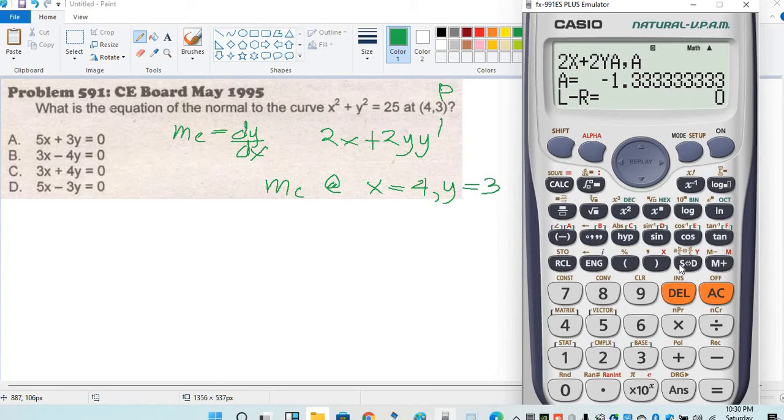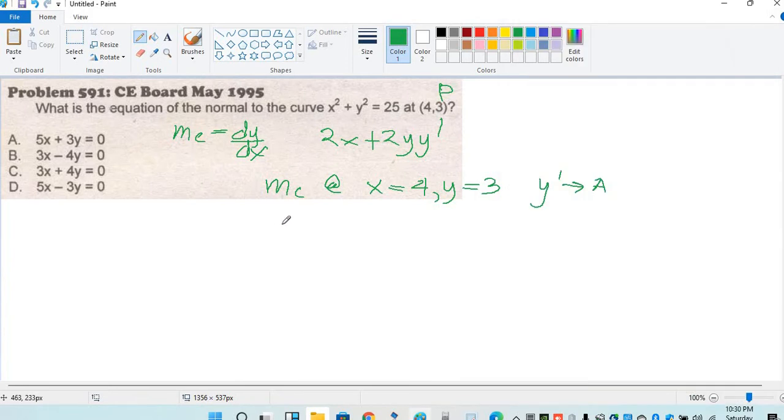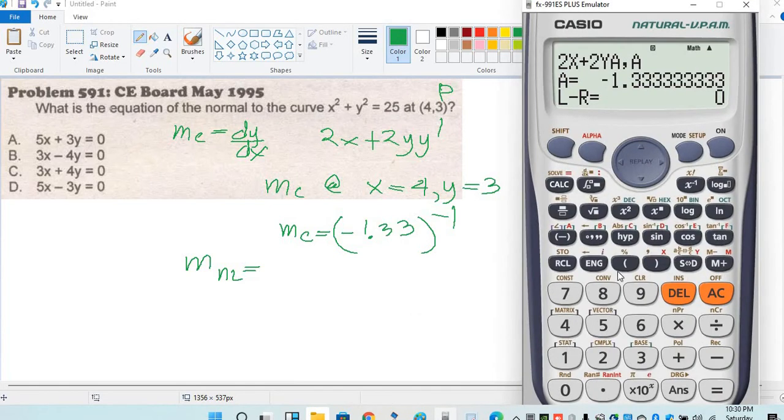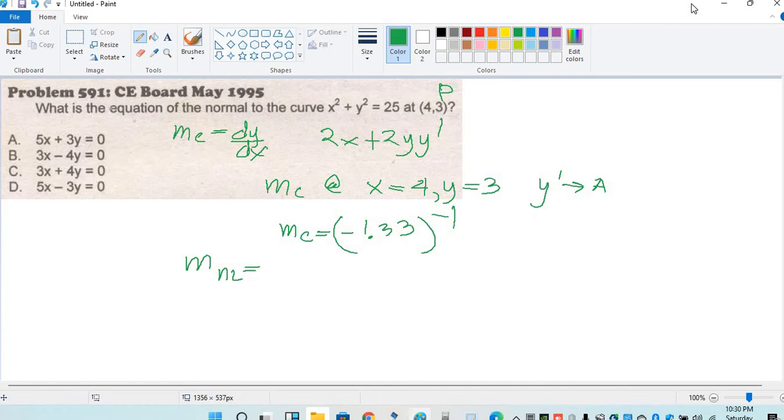Negative 1.33, slope ng curve. Ang slope ng normal line ay negative reciprocal. Negative unshared raised to negative 1. Equal 0.75, slope ng normal line.